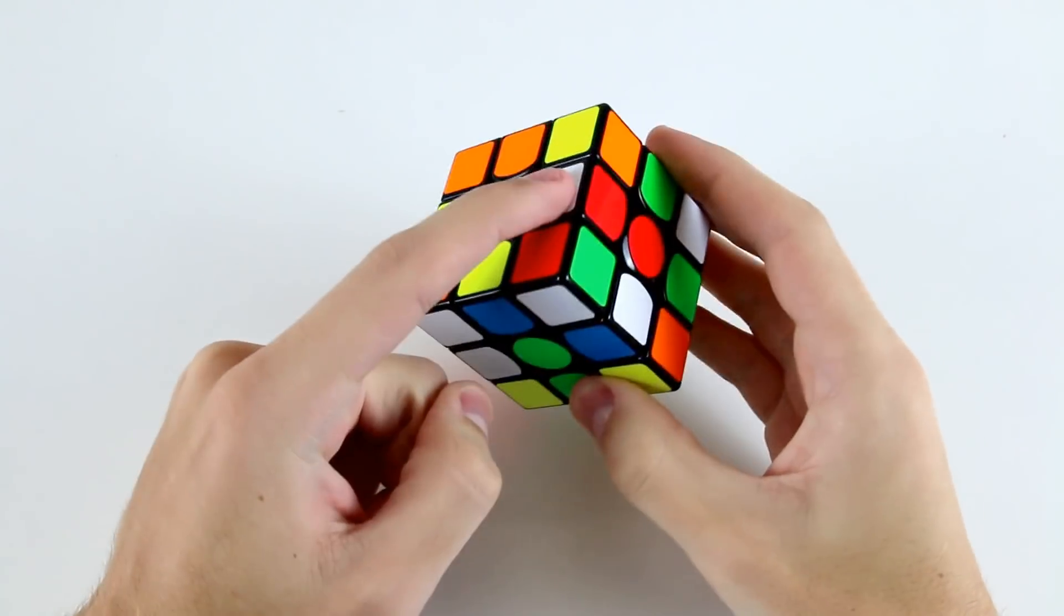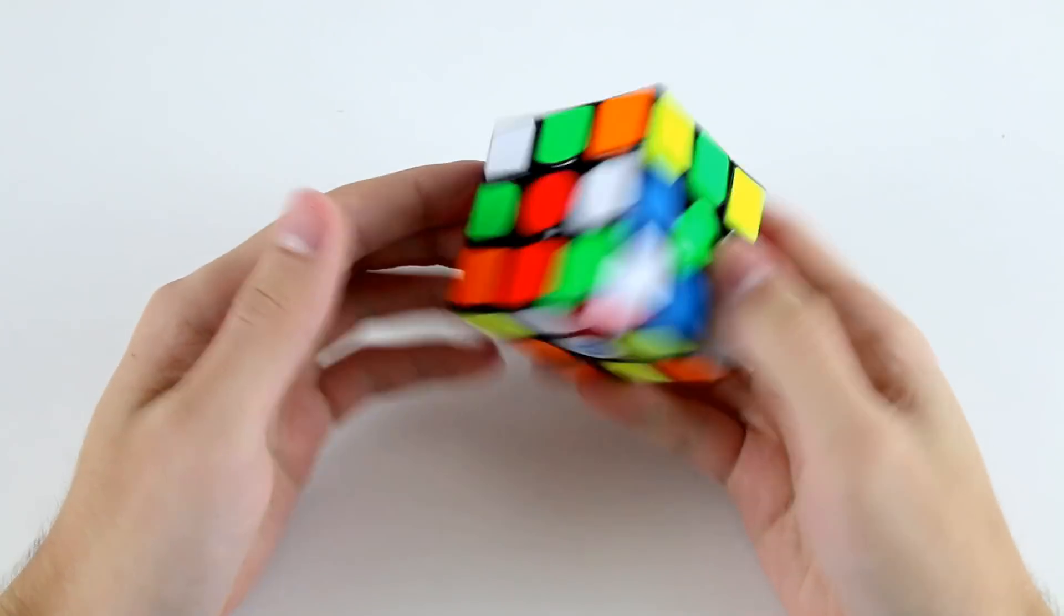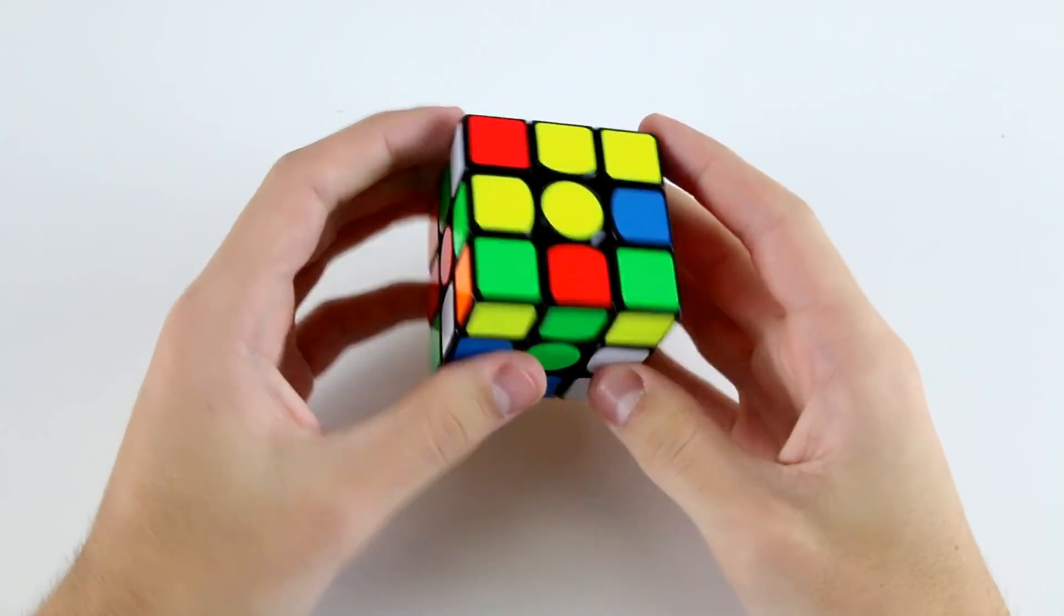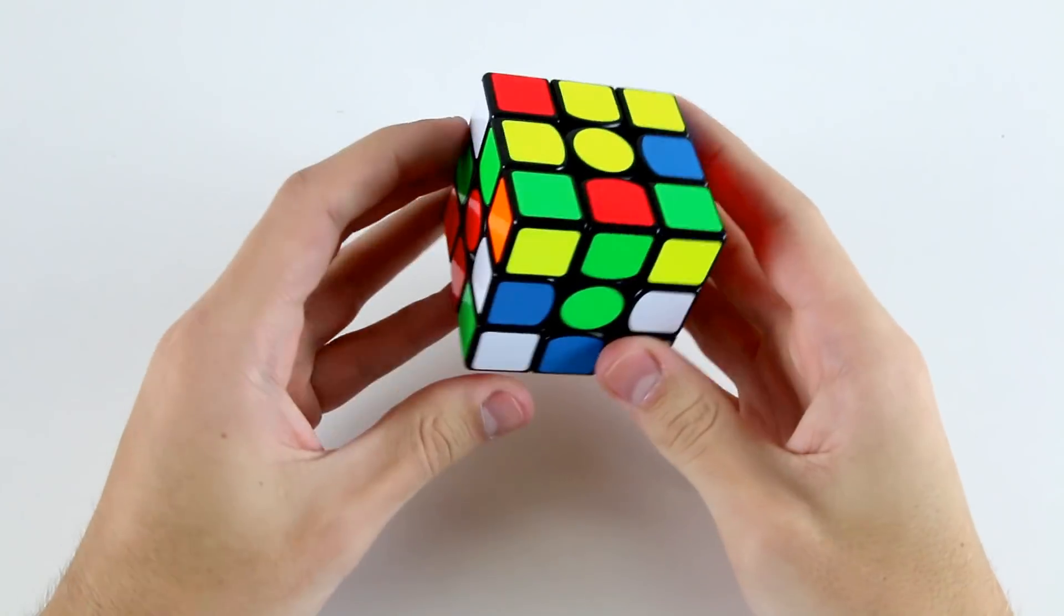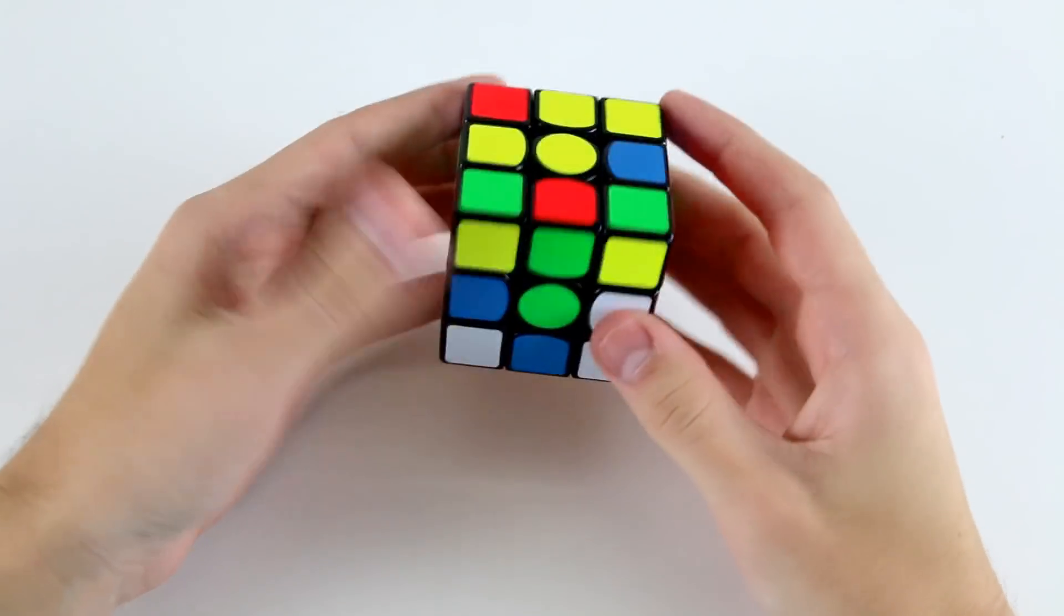In this scramble, I've got this one, this one, this one, and this one back here. I can actually do a nice extended cross. What I'm going to do is build an extended cross with this pair at the front left. I'm going to use keyhole to do it.